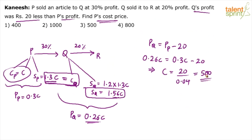This is one way of solving the question. Alternatively, instead of using the variable C, you can assume cost price of P is 100 and find values accordingly, then use proportionality to get the final answer.